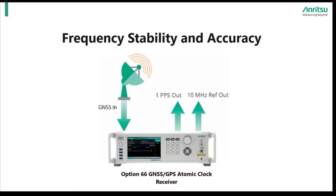Option 66, GNSS (Global Navigation Satellite System) and GPS (Global Positioning Satellite) Atomic Clock Receiver, also provides atomic clock accuracy. These references rely on satellites for a synced and accurate timebase reference. One of the nice qualities about this option is that it can further enable the in-field calibration option.